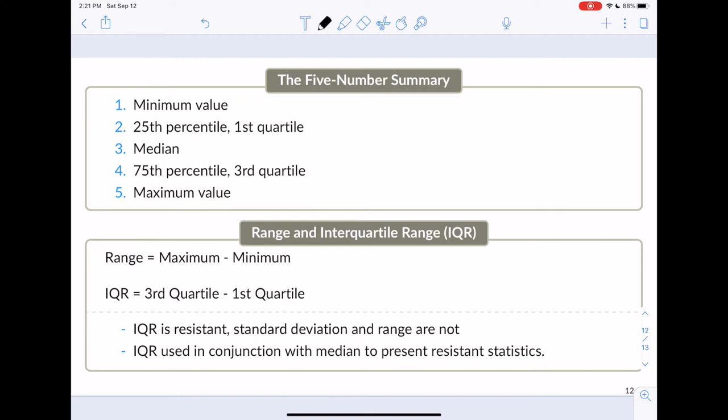So, before we go, we're going to talk about one more idea with variability and how we can describe it. The first is what's called the five number summary. And this is going to be very important, as I mentioned at the start of the lecture, when we start talking about box plots.